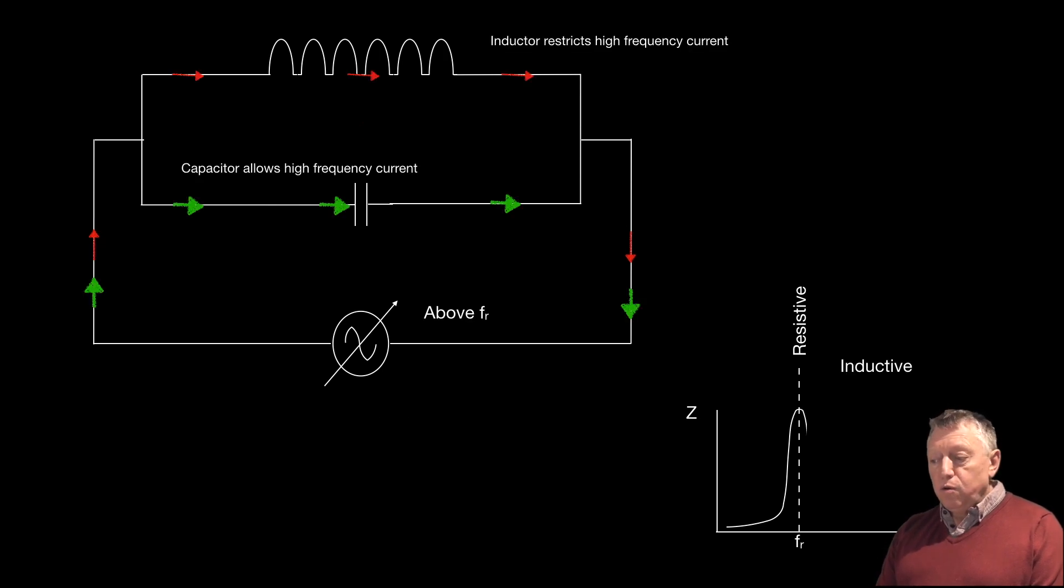If we continue to increase the frequency, the circuit then becomes inductive, because the inductor then dominates the circuit. At this point, at the very high frequencies, the capacitor is no longer dominating the circuit because it isn't resisting current flow.